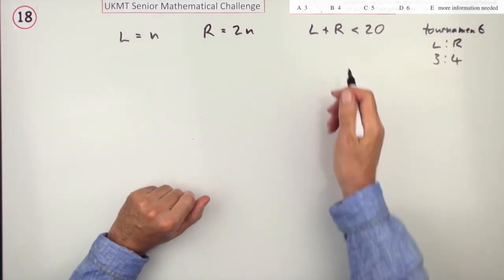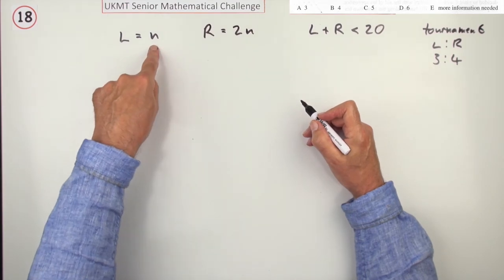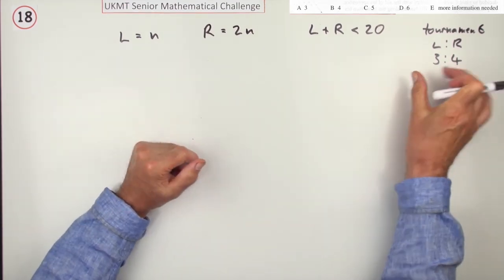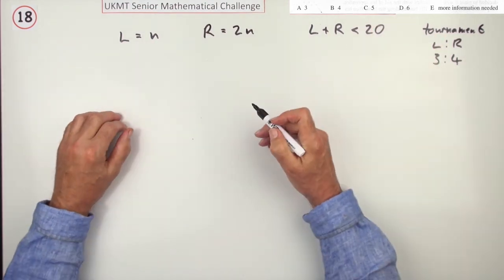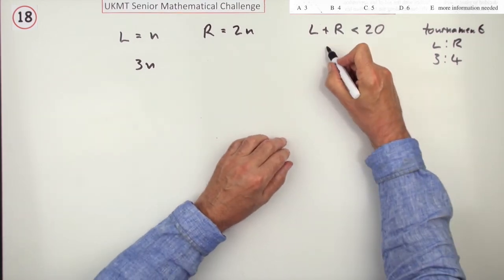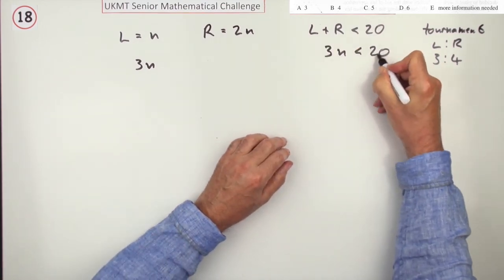But anyway, that's all by the by because the question just said how many left-handed players are there, what's the value of N if that was the ratio. So many games were there, well, there are 3N players altogether. Just a wee check here, that means 3N is less than 20.